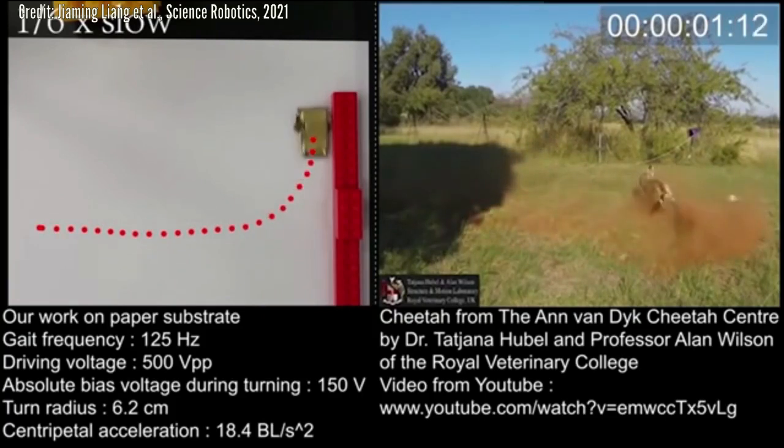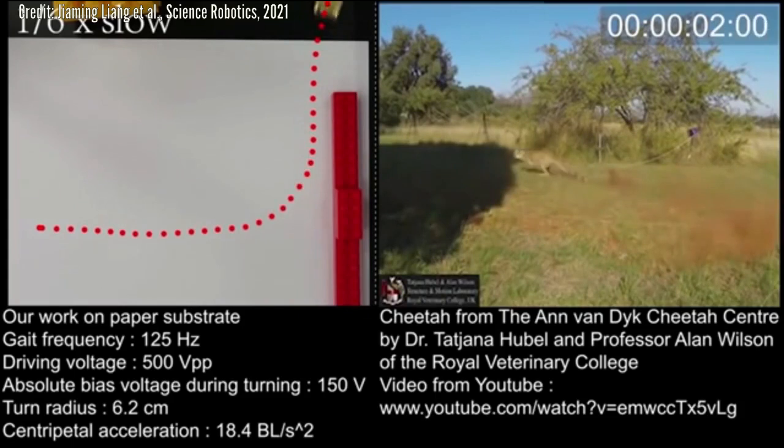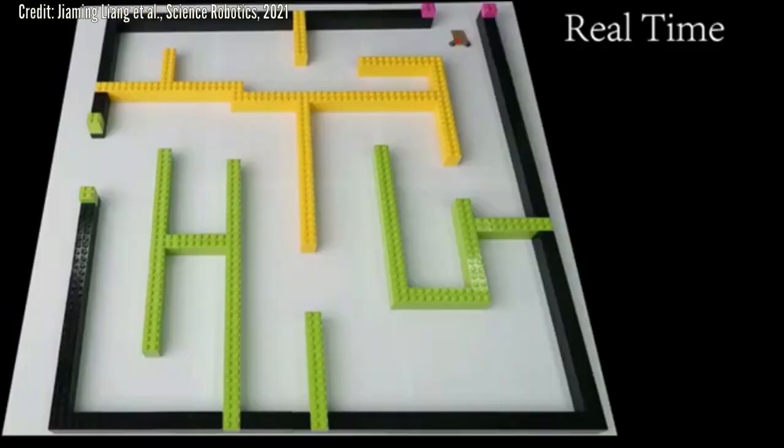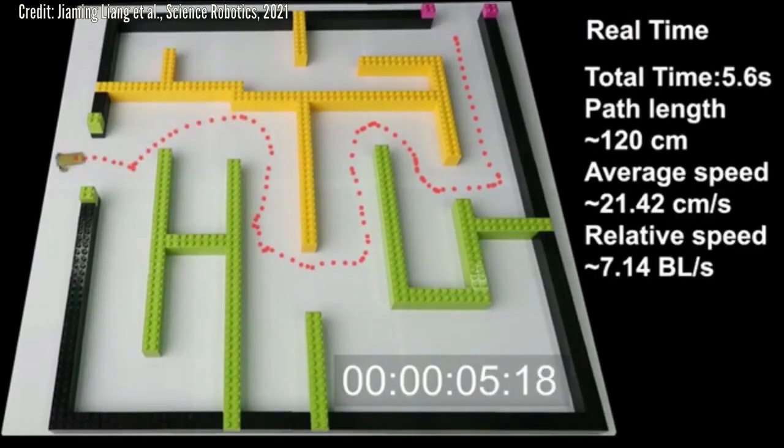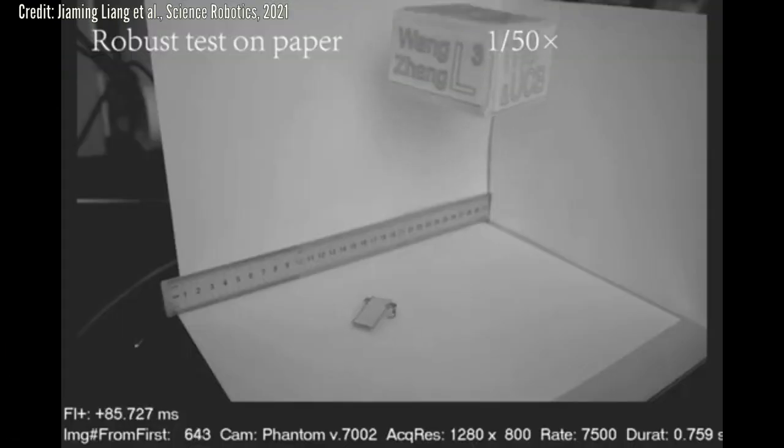To demonstrate the robot's agility, the research team filmed the robot navigating Lego mazes while carrying a small gas sensor and spurring to avoid falling debris. Because of its simple design, the robot can also survive being stepped on by a 120-pound human.